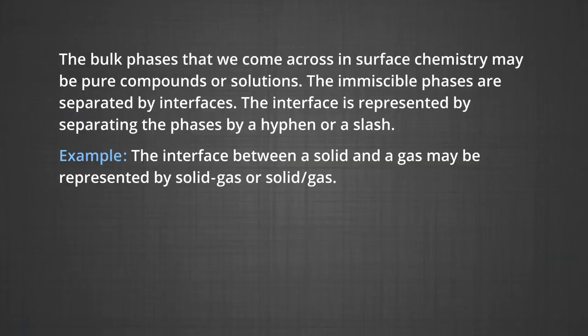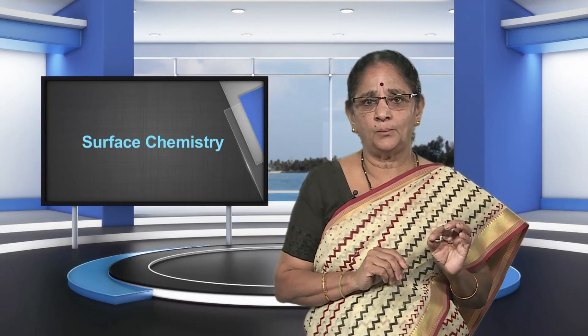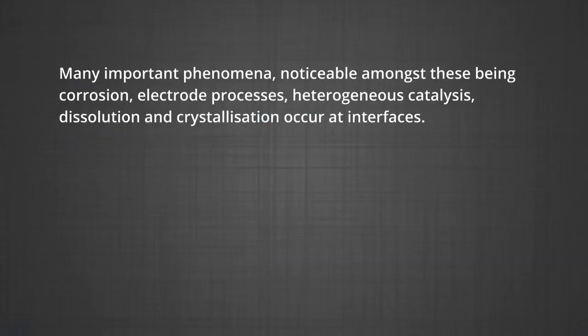The bulk phases that we come across in surface chemistry may be pure compounds or solutions. The two phases are separated by interfaces, represented by a hyphen or a slash — for example, solid-gas or solid/gas. Due to complete miscibility, there is no interface between gases. The interface is normally a few molecules thick, but its area depends upon the size of the particles of the solid phase. Many important phenomena — including corrosion, electrode processes, heterogeneous catalysis, dissolution, and crystallization — occur at interfaces.